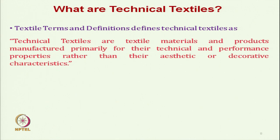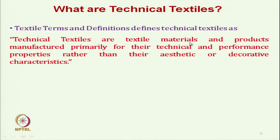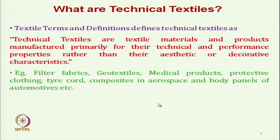By standard definition, technical textiles are defined as textile materials and products manufactured primarily for their technical and performance properties rather than their aesthetic and decorative characteristics. Under this definition, we can include filter fabric, geotextiles, medical products, protective clothing, tire cord, and composites in aerospace.